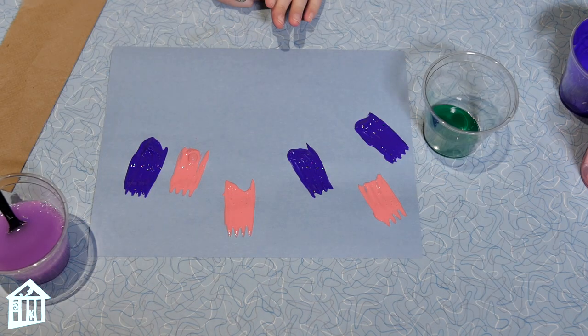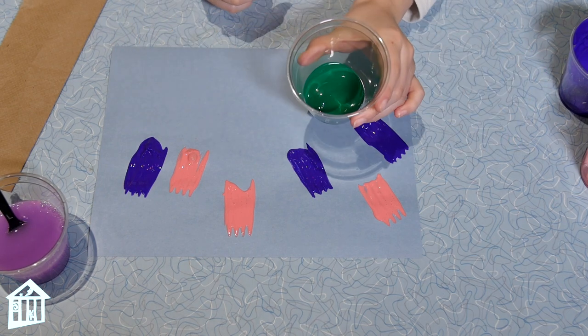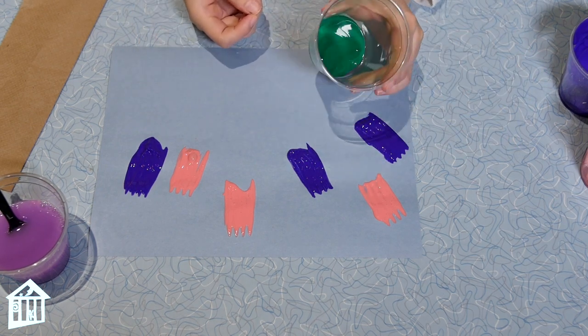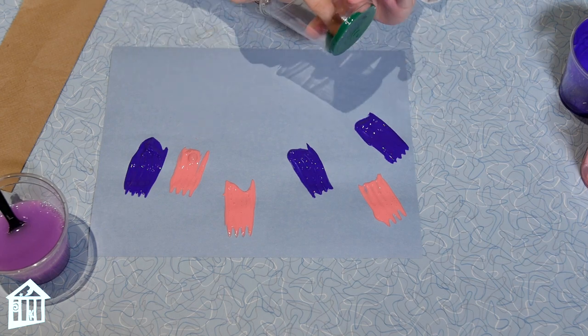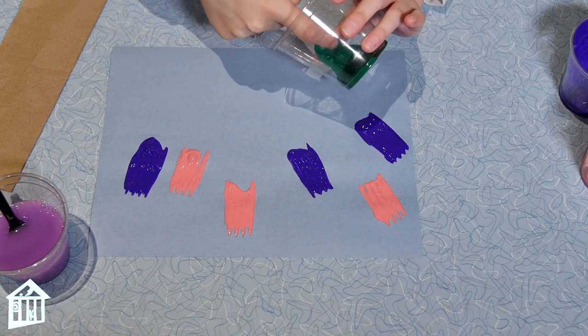And after you have added the tops of your tulip flowers then you can take your green paint and you can either use a paint brush or your finger. I'm going to do some finger painting to draw on my stems and the leaves.